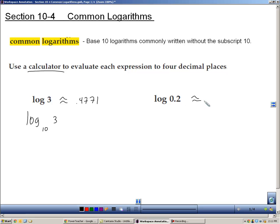Same thing here. Log 0.2, if you put that into your calculator, that's log base 10. That's negative 0.6990. So log base 10 is a common log and it can be put into your calculator.